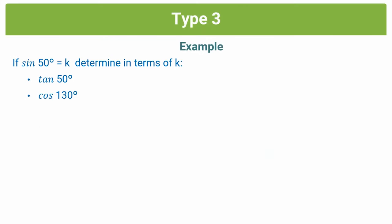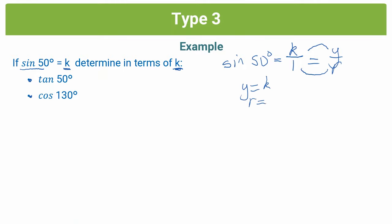For our first example, we are given sine 50 degrees equals k. We have our trig expression, sine 50, in terms of a constant, and we're asked to determine two other trig functions in terms of this constant k. Step one is to extract our variables. We're told sine 50 degrees equals k, which we rewrite as k over 1. The definition for sine is y over r, so we can infer that y is k and r is 1.